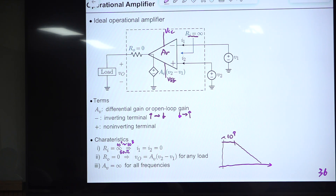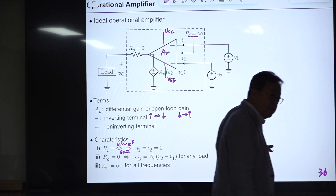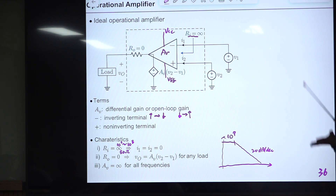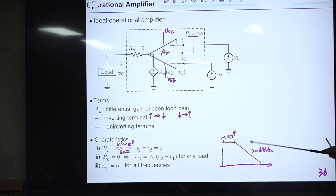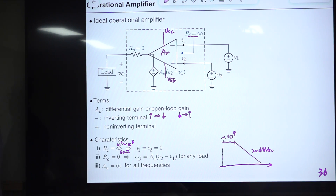The unity-gain buffer has infinite input impedance and zero output impedance, so there is no loading effect. This is very useful for cascading stages — without it, you would have severe loading effects. So it is used all the time even though the voltage gain is just one, because of its excellent impedance characteristics.